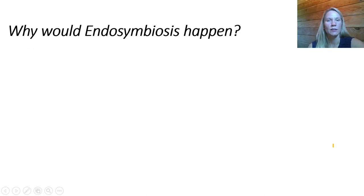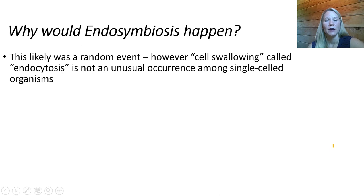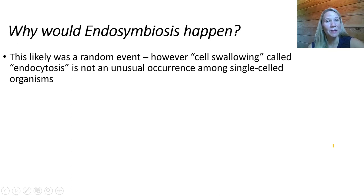The next question is why would this have happened, and how do we know? We think this was likely a result of a random event. However, the process of cell swallowing — a large ancestral cell swallowing tiny bacterial cells — is called endocytosis, and it is not unusual at all. This happens all the time and can be observed easily under a microscope among single-celled organisms. For example, this is actually the major way that your white blood cells patrol your body and eliminate invading bacteria, by swallowing and digesting them.